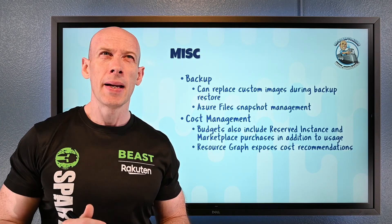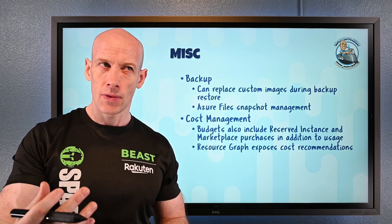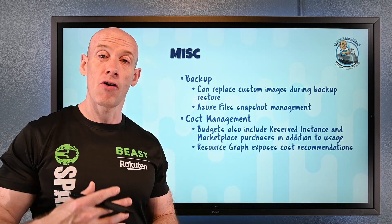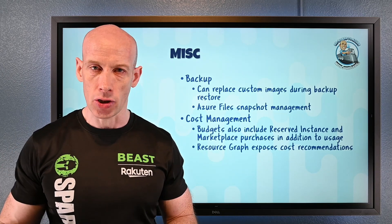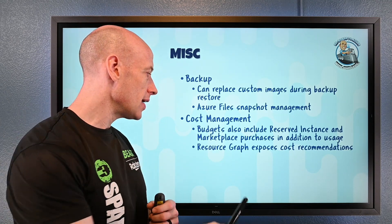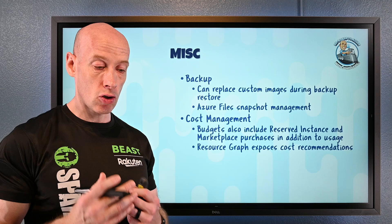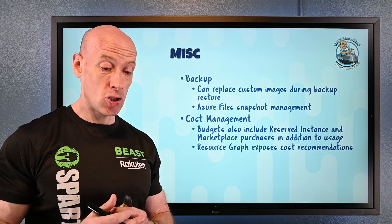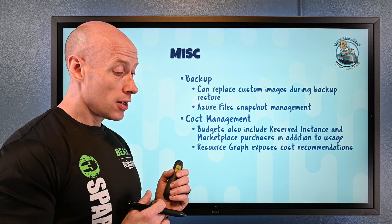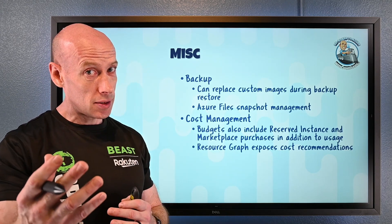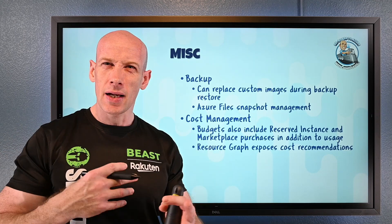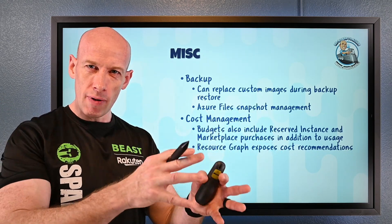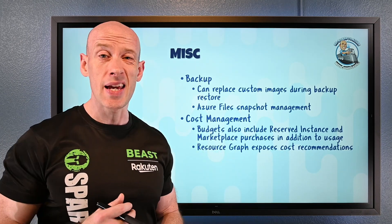For cost management, previously budgets only showed utilization — not reserved instances or marketplace purchases. Now you can include those in your budgets so you can see your reserved instance purchasing and Azure Marketplace purchasing. They're also exposed through the Resource Graph, where you can query by publisher type and charge type — marketplace purchases show as charge type 'purchase', reserved instances similarly, and regular usage still shows as charge type 'usage'.